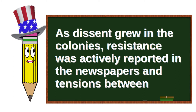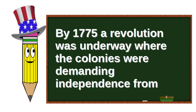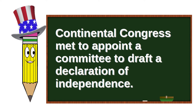As dissent grew in the colonies, resistance was actively reported in the newspapers, and tensions between Great Britain and the colonies were too much to ignore. By 1775, a revolution was underway where the colonies were demanding independence from the oppressive British rule. The cornerstones of self-rule were in place by June of 1776 when the Continental Congress met to appoint a committee to draft a declaration of independence.